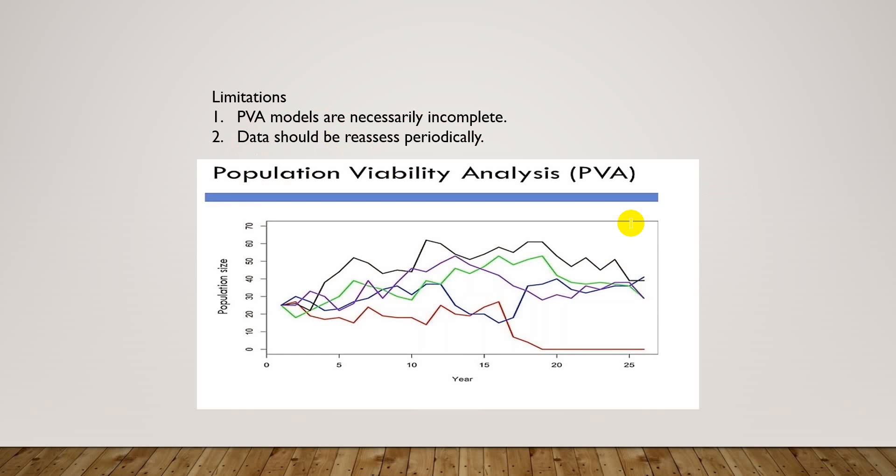The limitations of PVA are: PVA models are necessarily incomplete and do not provide complete data. Data should be re-assessed periodically, as the population keeps changing. Some species may produce several young in a single year while others may not, resulting in changing data. Small populations will fluctuate enormously because of the random nature of births and deaths, so re-assessment of data is very important and the process is difficult.